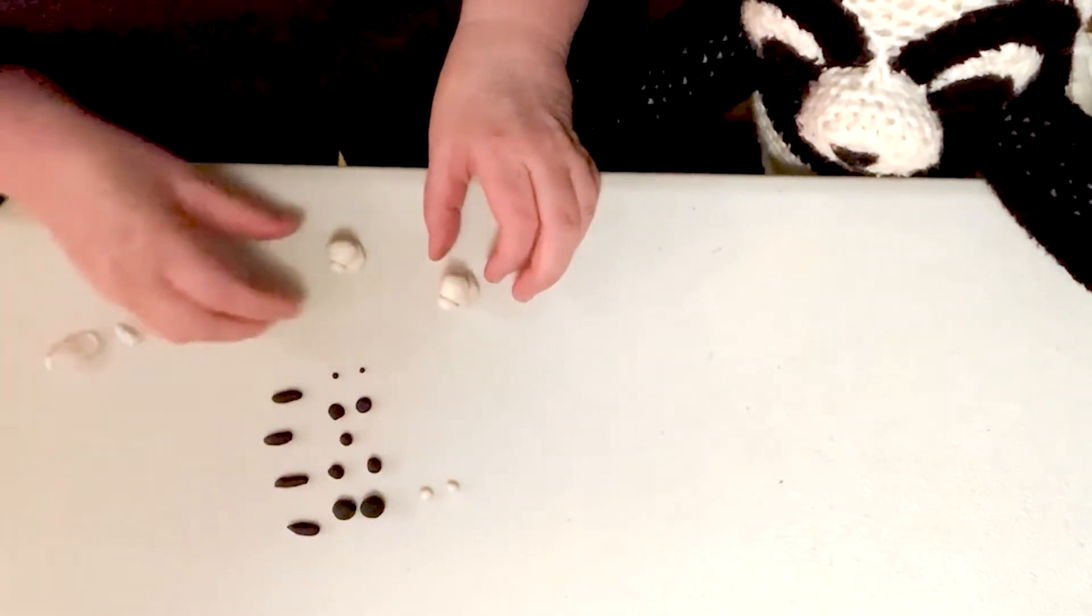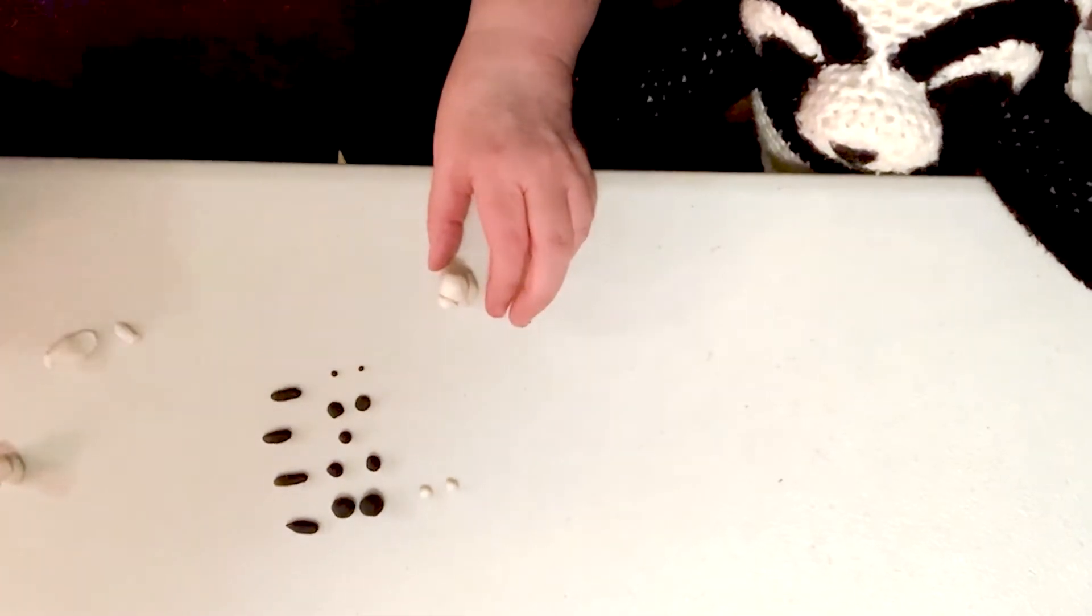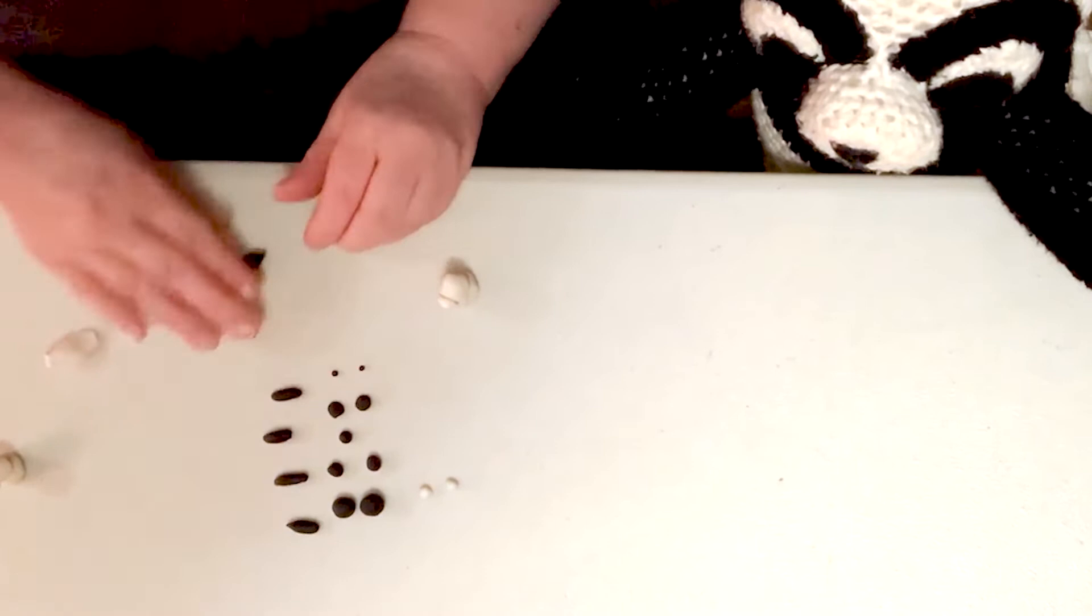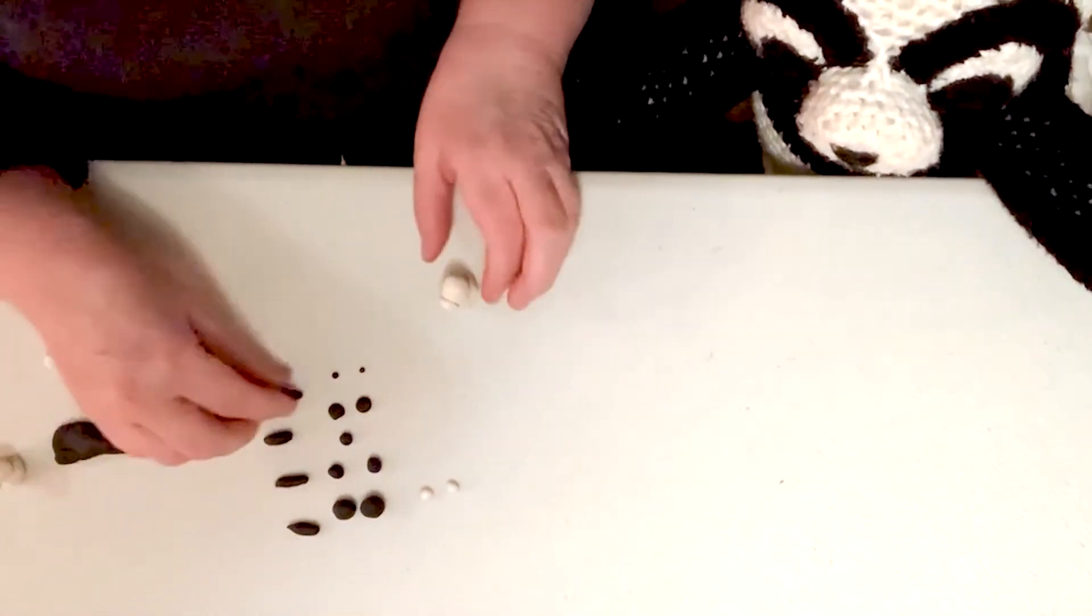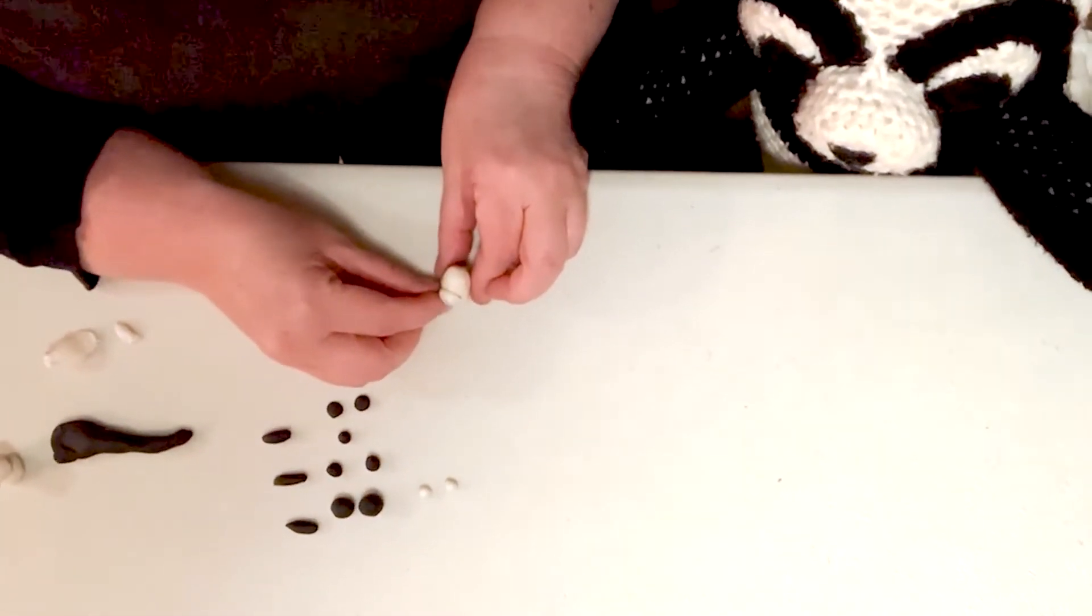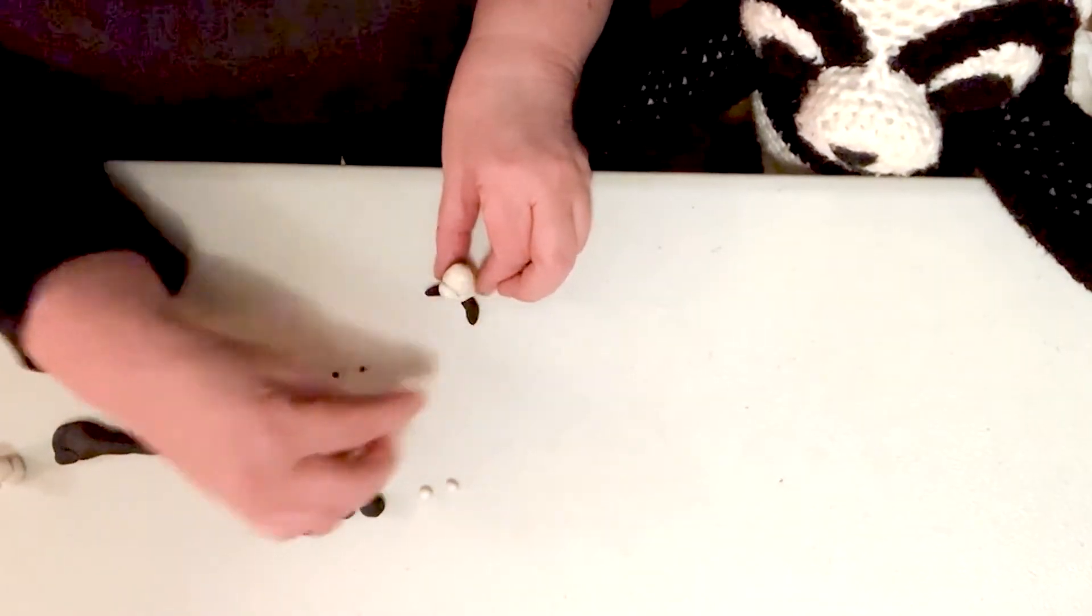Then we're going to add legs. So you can roll out legs in a tube shape and put that on here. So you have a leg on the bottom.